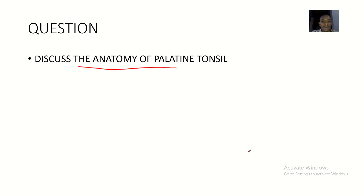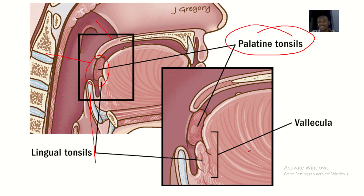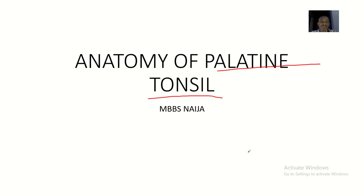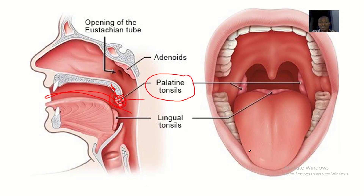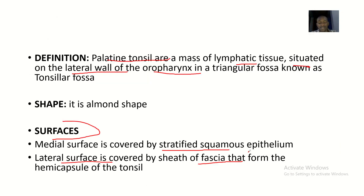That's it about the anatomy of the palatine tonsil. Later on, we'll be talking about the applied anatomy of the palatine tonsil, which should involve inflammations — because if the palatine tonsils are inflamed, then you have pain when swallowing food. So this is it about the anatomy of the palatine tonsil. We spoke about its definition, shape, surfaces, borders, and poles. See you guys, bye.